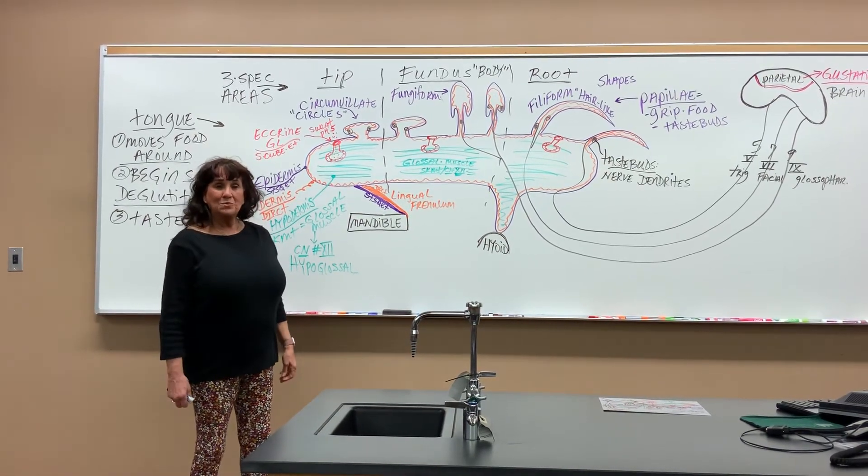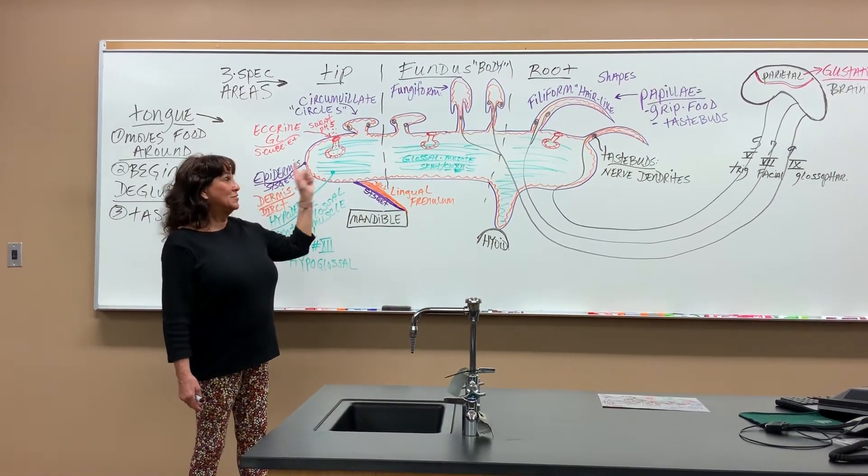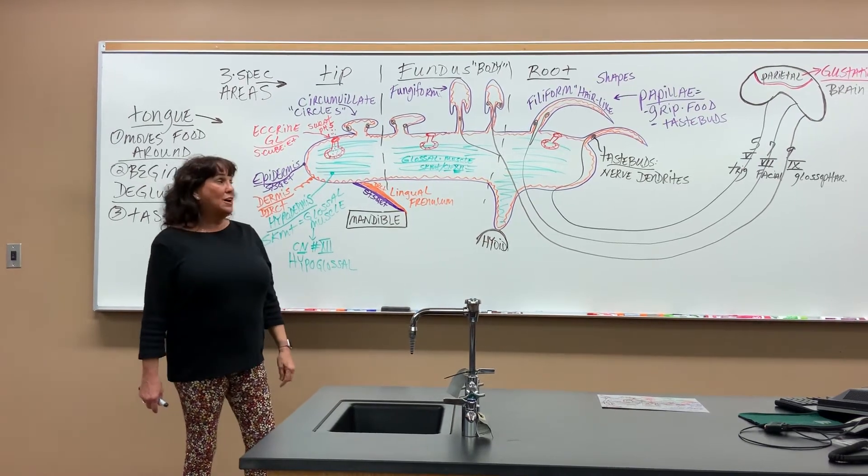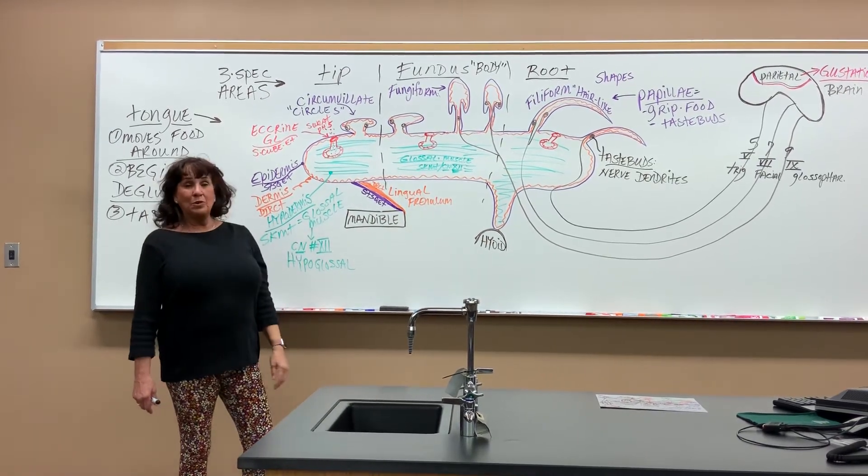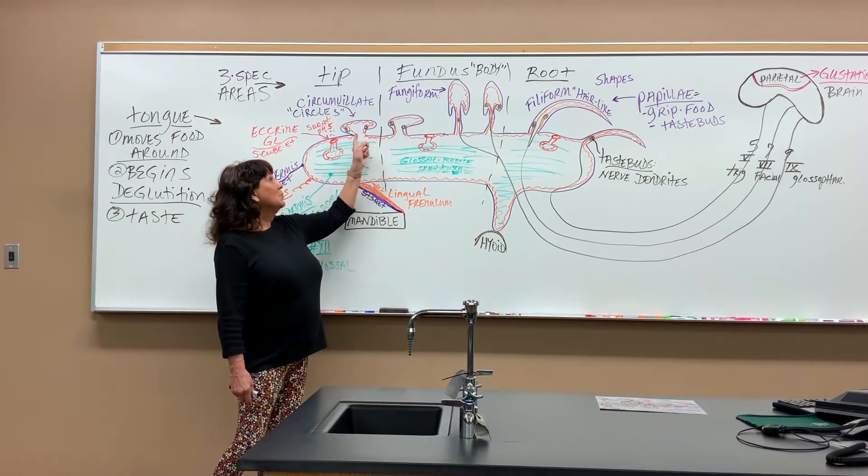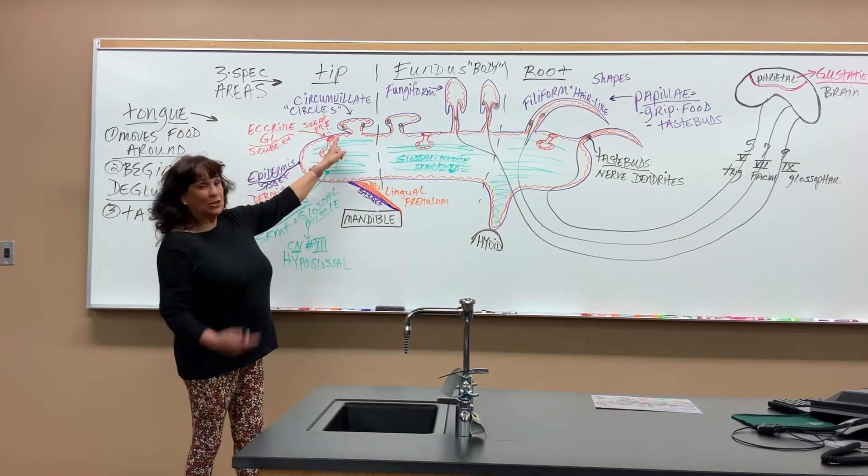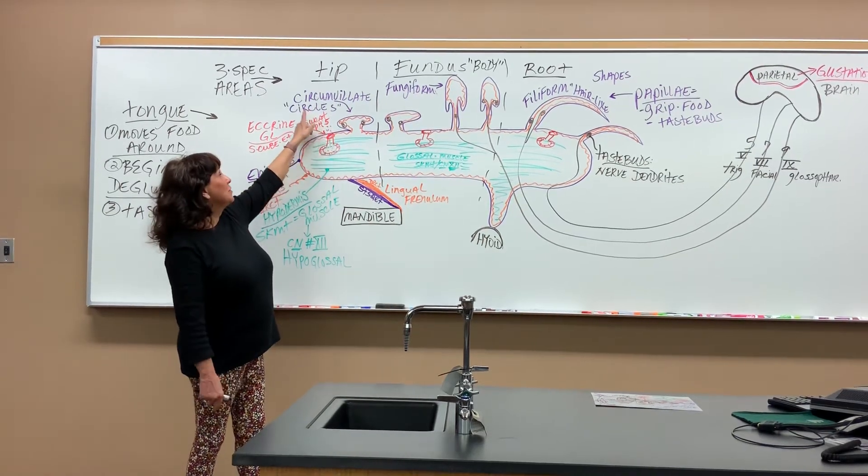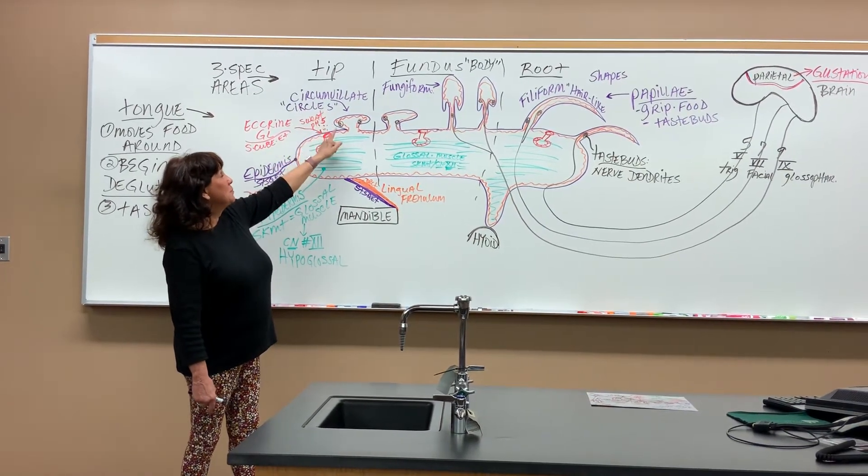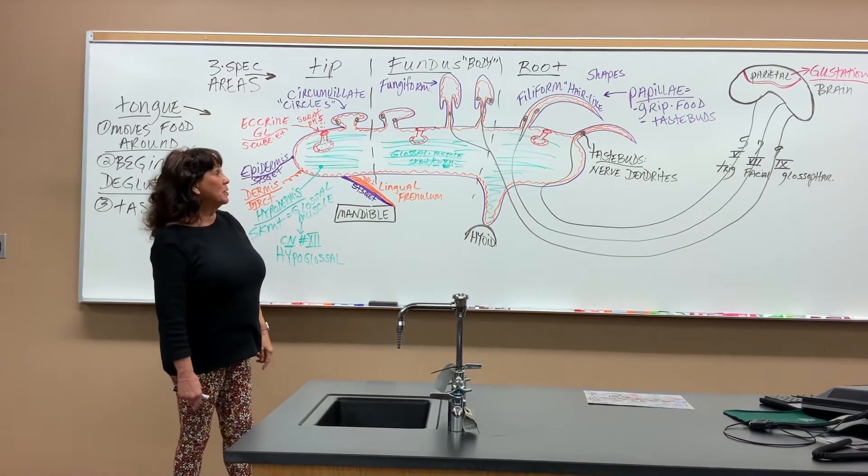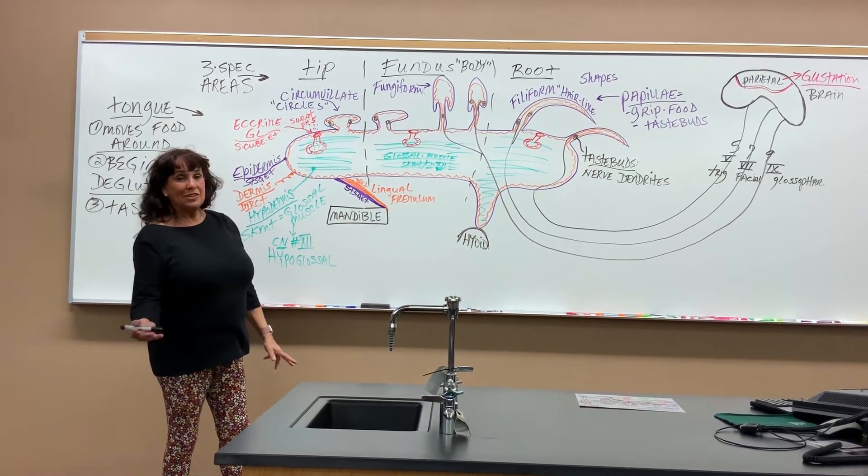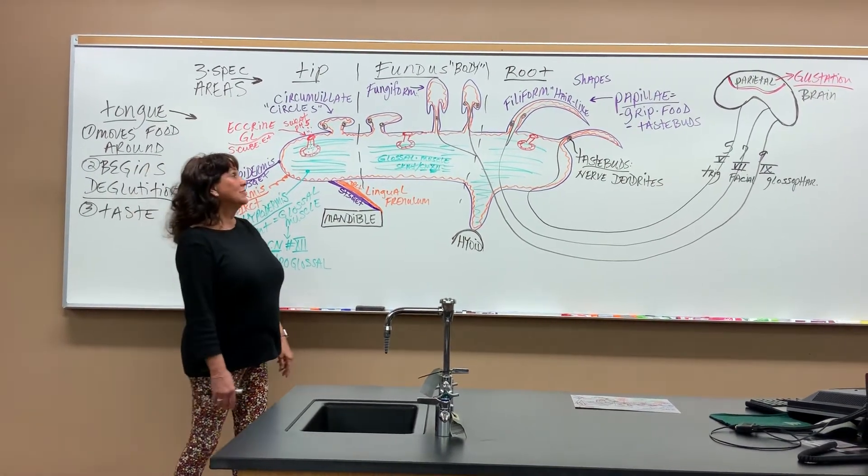There are three basic shapes on our tongue. If you have pets at home, look at their tongues because they have these same shapes. Always in the front, we have these little round ones that look like circles. They're very flat and are called circumvallate papillae. We'll also see this for the cat tongue when we do the dissection in lab.